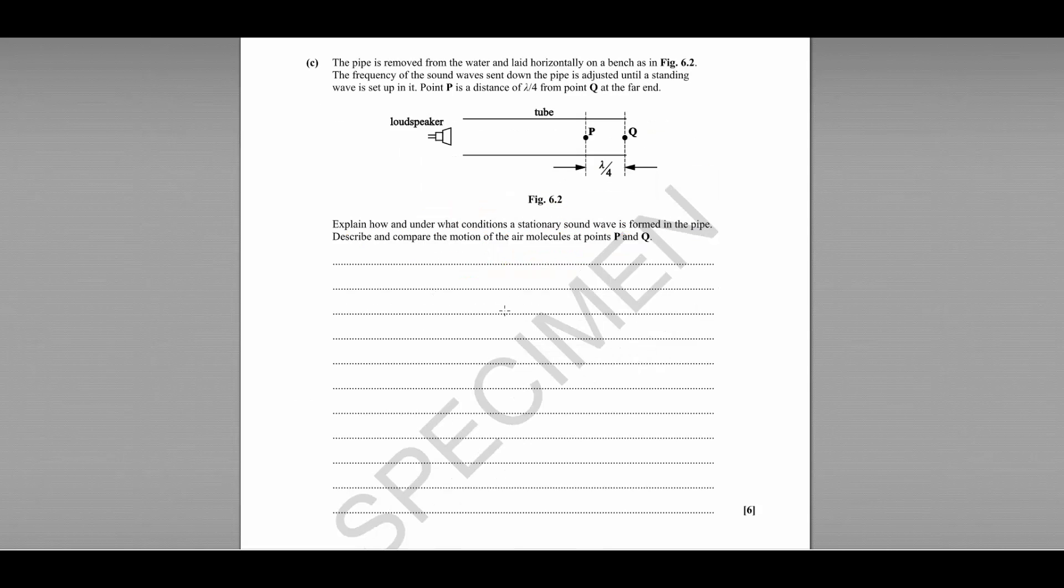In part C, we now have the pipe removed from the water and laid horizontally on a bench. The frequency of the sound waves is adjusted until a standing wave is set up. Point P is a distance of a quarter of a wavelength from point Q at the far end.